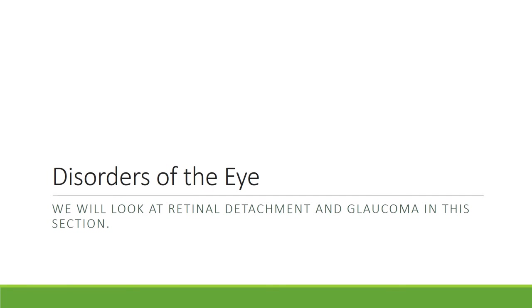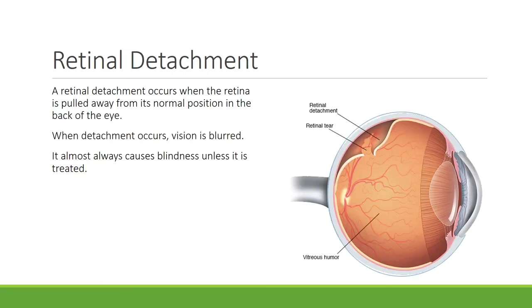We're going to look at two disorders of the eye: retinal detachment and glaucoma. Retinal detachment occurs when the retina is pulled away from its normal position in the back of the eye, as seen in the diagram on the right. When detachment occurs, vision is blurred, and it almost always causes blindness unless treated.